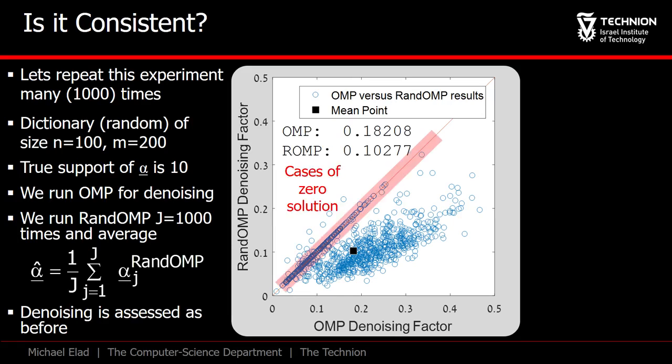Have you noticed that there is a group of points giving the very same performance for both approaches? These are the cases in which the created signal z has energy below epsilon, and then all the solutions we produce are plain zeros.